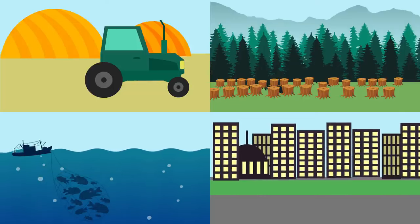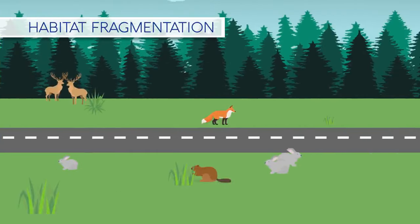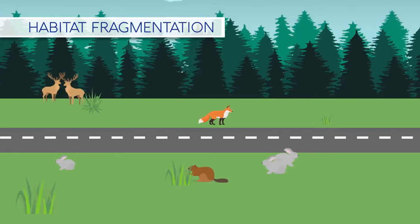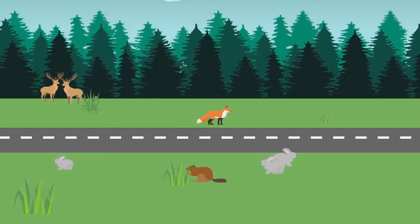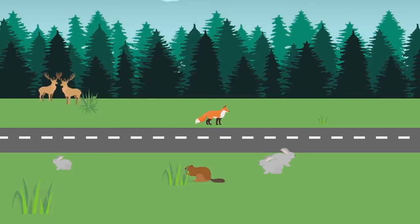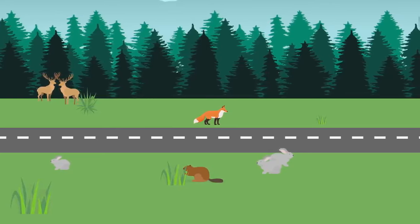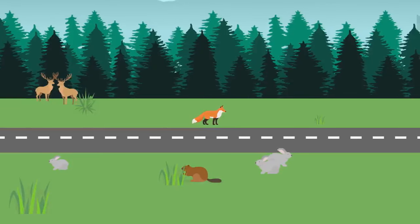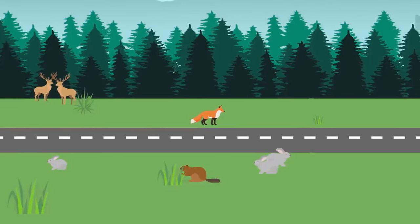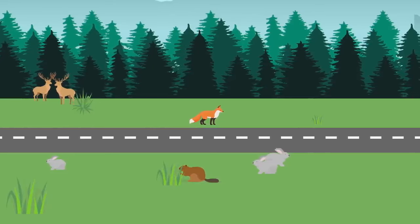Habitat loss has greatly reduced species richness. Habitat fragmentation has also meant that populations have been split into smaller subunits, which then when faced by challenging circumstances have not been able to adapt and survive.